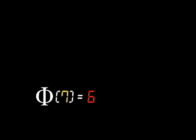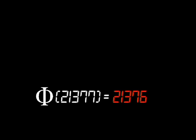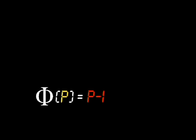So if you are asked to find phi of 21,377, a prime number, you would only need to subtract 1 to get the solution, 21,376. Phi of any prime is easy to compute.